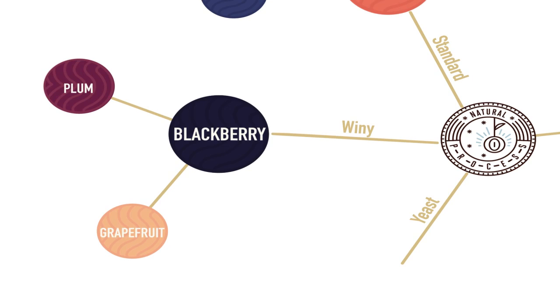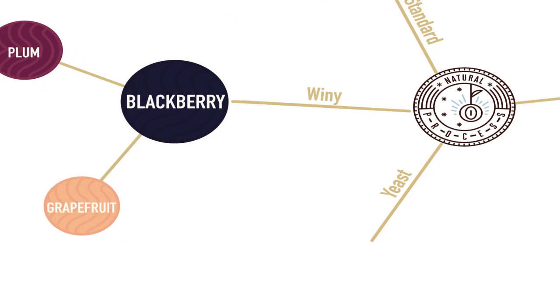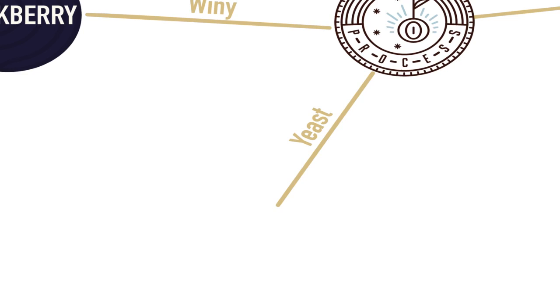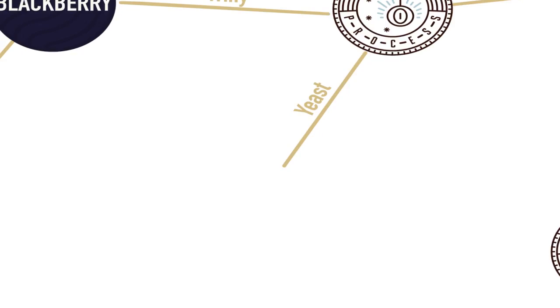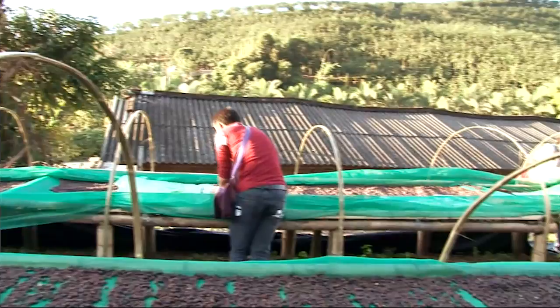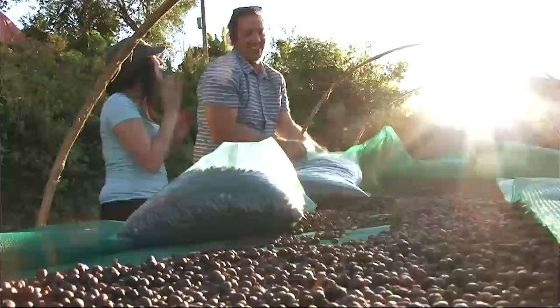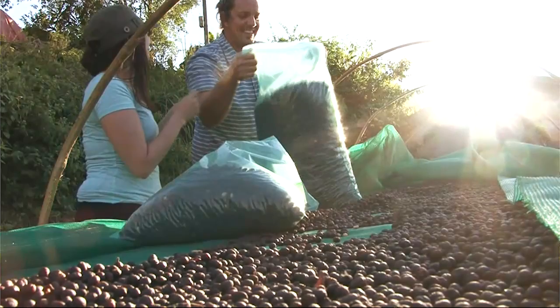The last natural process option we'll look at is yeast fermented. This is an extremely unique processing method that is not widely used, but we experimented some with it and it was incredible. Basically, you harvest the cherries, you dry them in the fruit, but when the cherries are about half dry, you stop the drying process by re-bagging them in airtight bags and you allow them to yeast ferment.